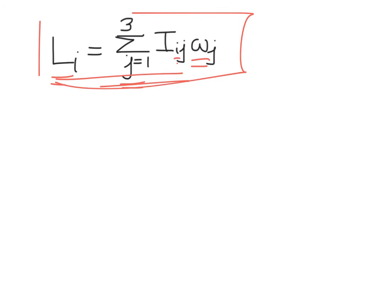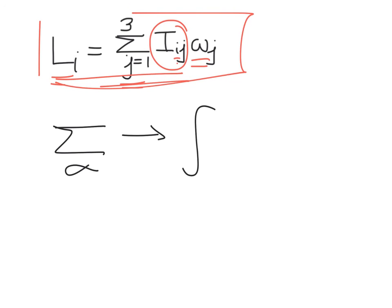Keep in mind that this formulation for the moment of inertia tensor holds even for a continuous body — not just discrete particles. In that case the sum over alpha turns into an integral over the volume of the body. The book works through some nice examples of this, and I would suggest reviewing those examples.